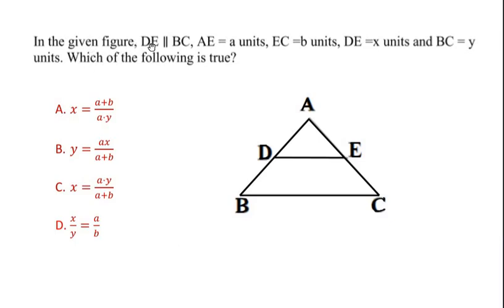In the given figure, DE is parallel to BC, and AE is given as a units and EC is given as b units. DE is given as x units and BC is given as y units. Which of the following is true?